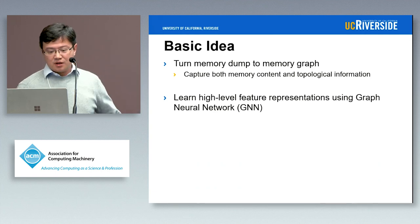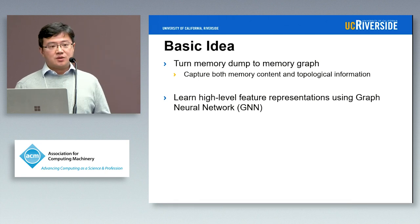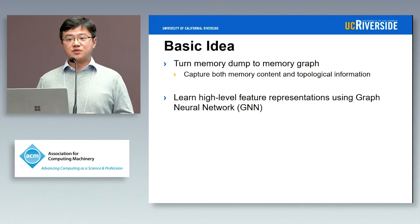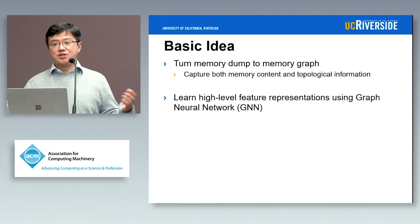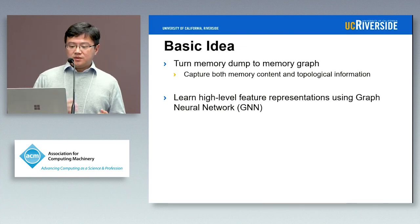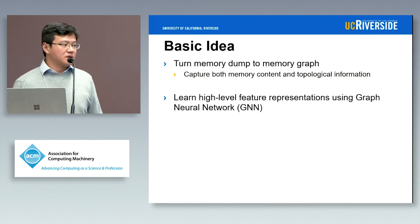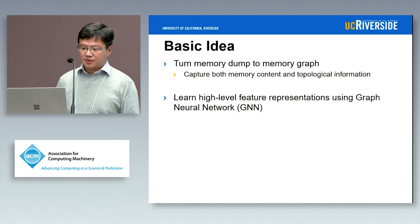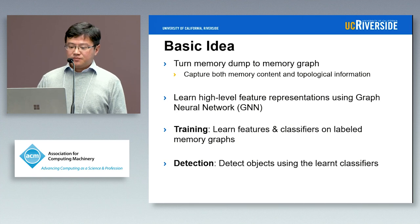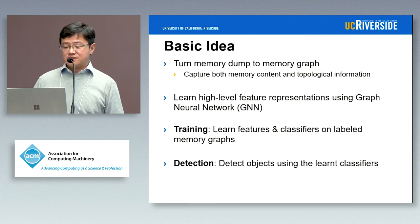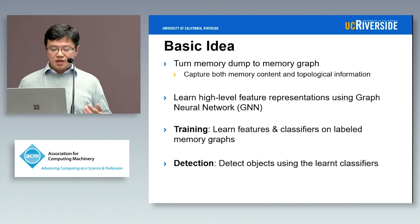To be more specific, our basic idea is as follows. We turn a memory dump into a memory graph. The reason is that we want to capture both memory content information as well as topological information — neighborhood information, points-to relations, and so on. We then learn high-level feature representations from this memory graph using a graph neural network, and perform supervised learning using labeled data for training, training the feature learning and classifiers together. For detection, we use the learned model on unknown data to make classifications.